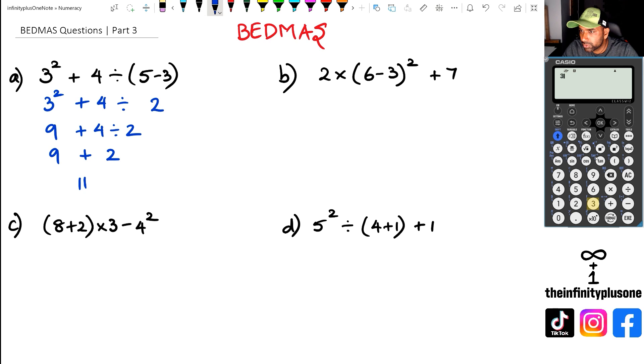So we're going to verify this. We've got three squared plus four divided by five minus three, and that's giving us an answer of eleven.